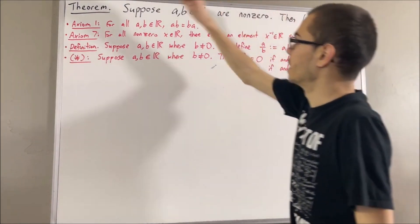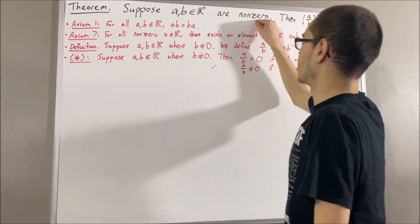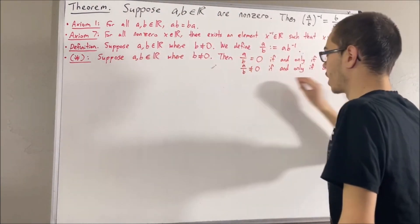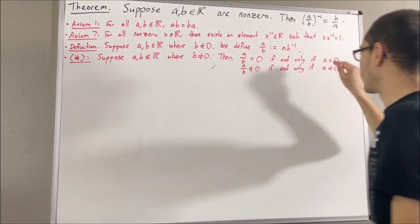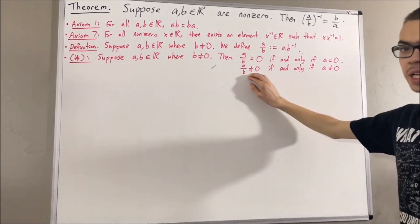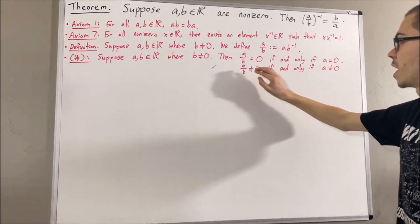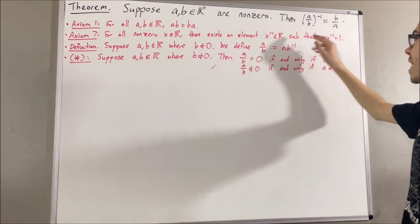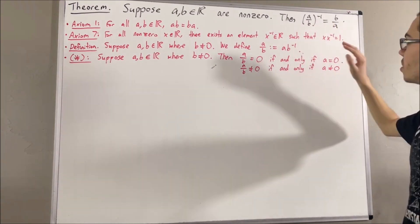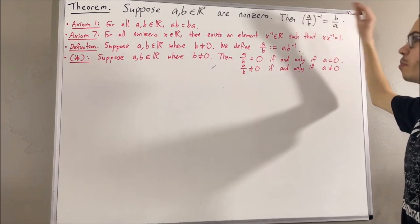So, in this theorem, since we are given A and B are both non-zero real numbers, then by star, we have B not equal to 0 and A not equal to 0, so we can conclude A over B is not equal to 0. So since A over B is not equal to 0, we can make sense out of the reciprocal of A over B. So this statement makes sense, so now let's try to prove it.